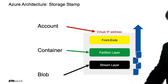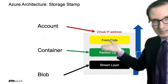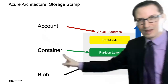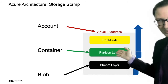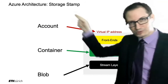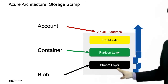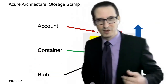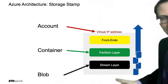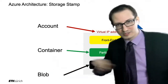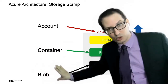In terms of the Azure implementation: the account name selects the machine via a virtual IP address that connects to the front end. The container ID gives access to the partition layer within the storage stamp. The blob — the object — goes to the streaming layer, because you stream the bits of your object to get it. Think of Netflix: this is literally video streaming. So: account maps to the front end, container to the partition layer, blob to the streaming layer.